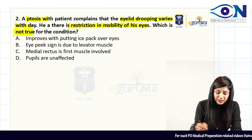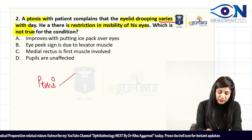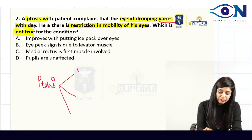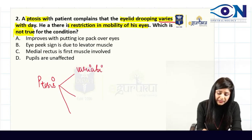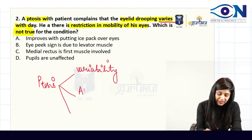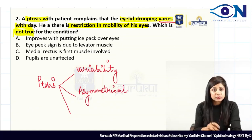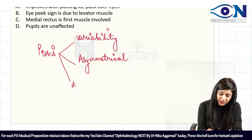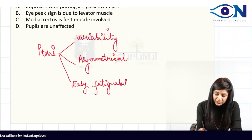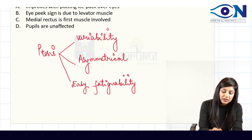This patient has ptosis that is varying. There are three key features to remember: number one, variability of ptosis during the day; number two, asymmetrical ptosis between the two eyes; and number three, easy fatigability. Whenever you encounter any of these three features in a ptosis case, always keep them in mind.